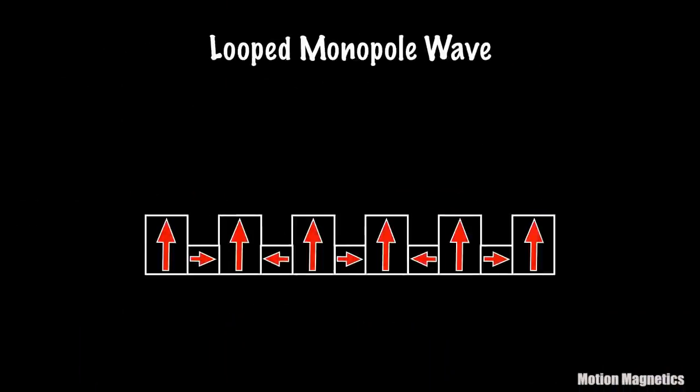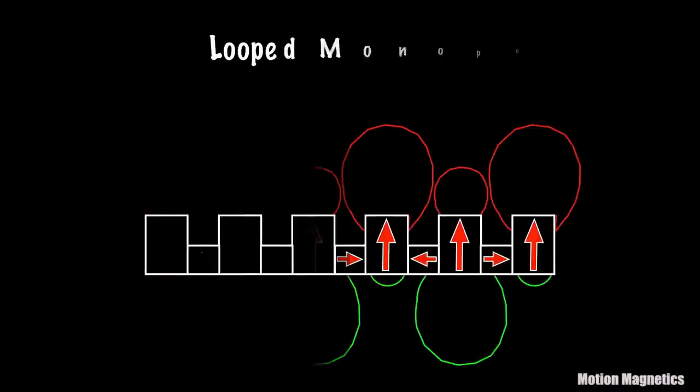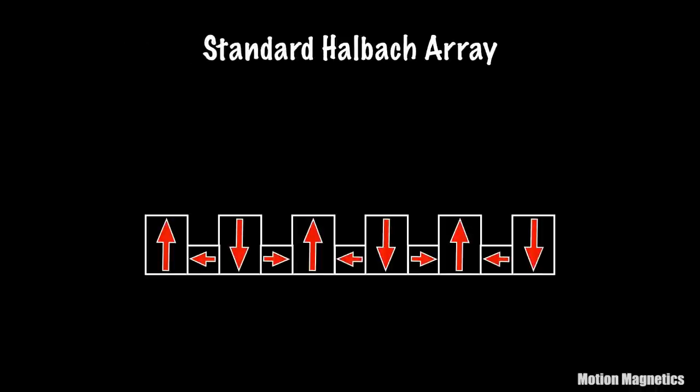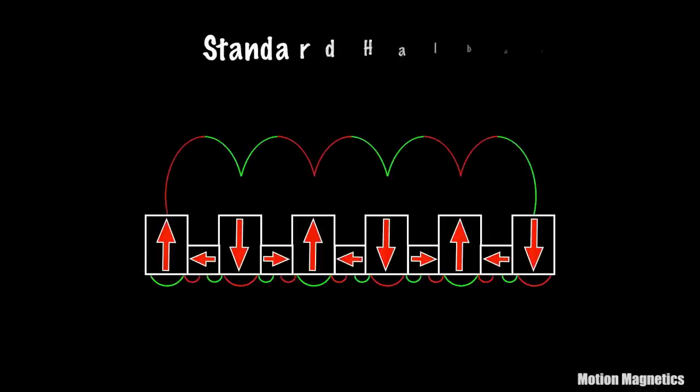The new effect I discovered is a looped monopole wave. Instead of the oscillating north-south pattern you get with a standard Halbach array, what you basically get with this assembly is a monopole pattern, with only north poles on one side and south poles on the other.